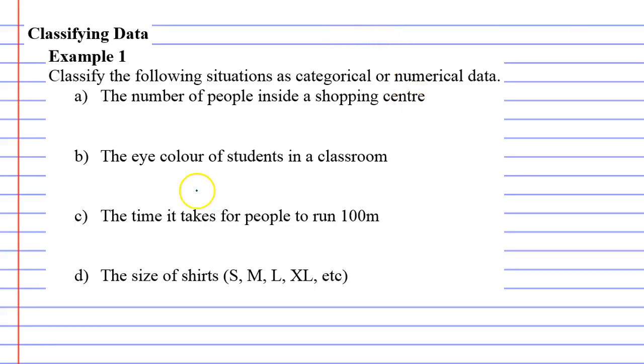Write that down: category and number. Question a: the number of people inside a shopping center. That's going to definitely be a number, maybe 920 people, so we'll say numerical data.